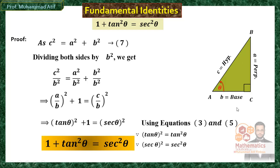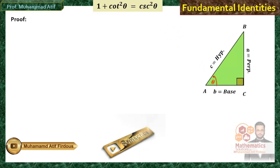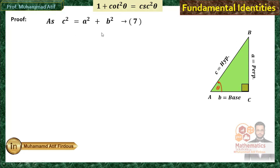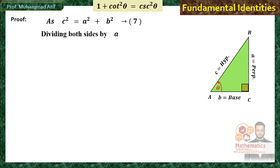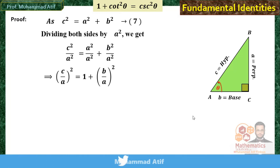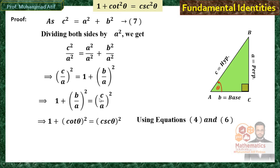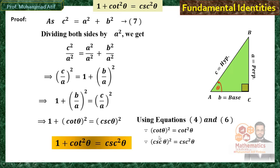Now I am going to prove the last identity: 1 + cot²θ = csc²θ. Again using equation 7, C² = A² + B², this time I divide by A². This gives C²/A² = A²/A² + B²/A², which simplifies to (C/A)² = 1 + (B/A)². Using equations 4 and 6, B/A = cotθ and C/A = cosecantθ. So simplifying: 1 + cot²θ = csc²θ.